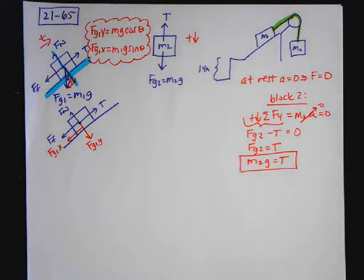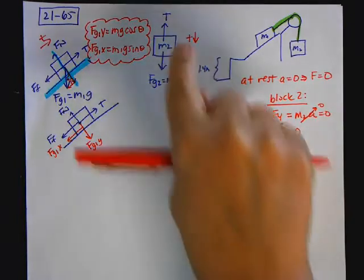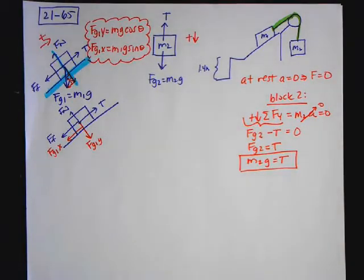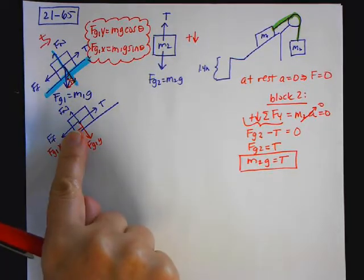So I know now that FG2 is equal to the tension. So that's M2G is equal to the tension. So that is applying Newton's second law to this mass, because that's what they want you to do on the AP test.